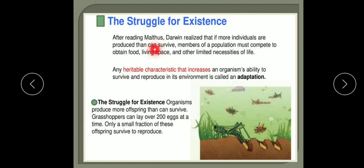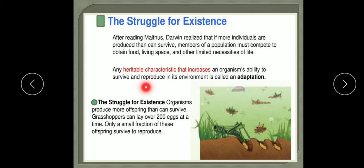Organisms must adapt themselves to changes taking place in their surroundings. Any heritable characteristic that increases an organism's ability to survive and reproduce in its environment is known as adaptation. Organisms better adapted are able to survive. For example, a grasshopper can lay 200 eggs at a time, but only a small fraction of these offspring survive to reproduce. This is the struggle for existence.